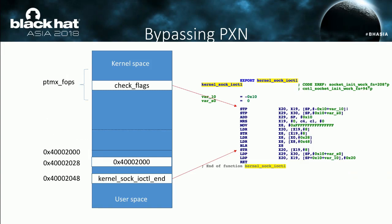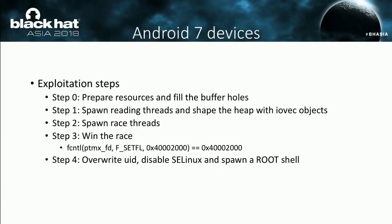A public method to bypass PXN mitigation and gain arbitrary read-write ability is hijacking a cred or seq_operations kernel pointer. Since the lower 32 bits of the X0 register are controllable, a simple JOP chain can be easily constructed. For Android 7 and lower devices, the exploitation steps are straightforward: first prepare proper resources like JOP/PXN gadgets, pipe file descriptors, and an inotify monitor, then fill the buffer holes in the heap. Spawn reading threads and shape the heap with iovec objects. Then spawn race threads and do the race check in the main thread. If the race is won, arbitrary read-write ability is gained. The last step is to overwrite UID, disable SELinux, and spawn a root shell.